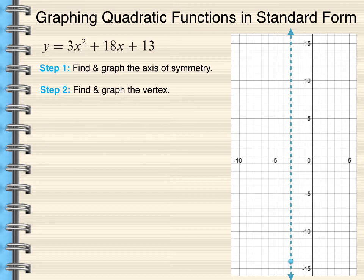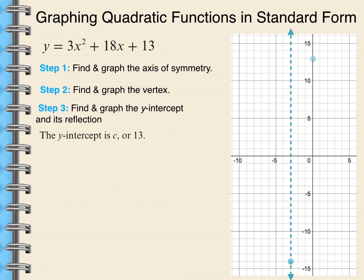Next, I want to find and graph the y-intercept. Do you remember what we said for the y-intercept? That would be 13 because when a function is in standard form, a quadratic function, the y-intercept is always the constant term. So I'm going to go ahead and plot 13 on my y-axis and the reflection of that point.